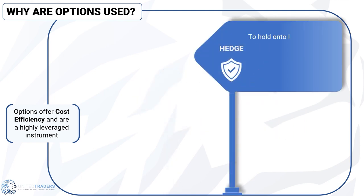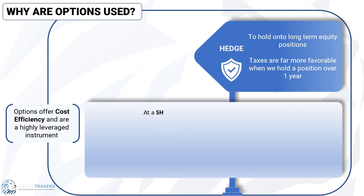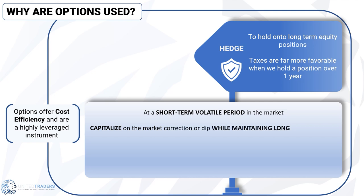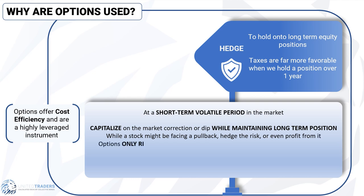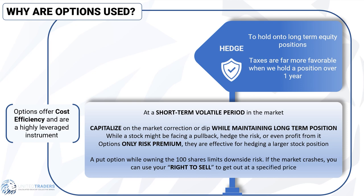Hedging risk. One of our favorite utilizations of options is the ability to hold onto your long-term equity positions. Taxes are far more favorable when we hold a position over one year. If we sell our long-term holdings due to a tight stop loss, we may be limited on re-entry due to the wash sale rule. When we foresee a short-term volatile period in the market, we can still capitalize on a market correction or dip while maintaining our long-term position. Because options only risk premium, they are effective for hedging a larger stock position — buying a put option while owning 100 shares limits downside risk. If the market crashes, you can use your right to sell to get out at a specified price.